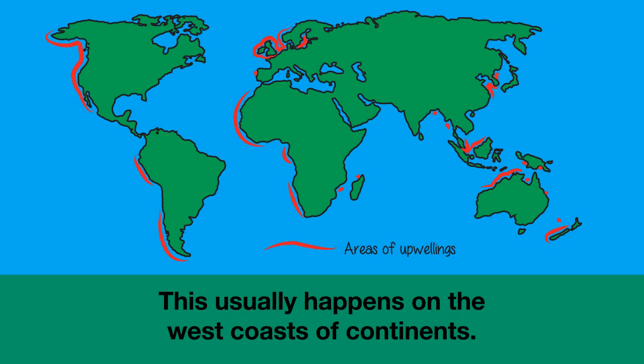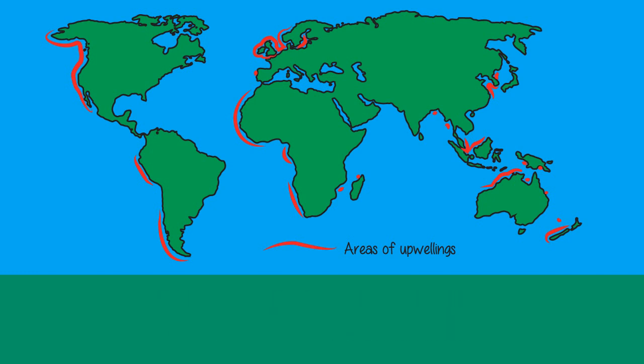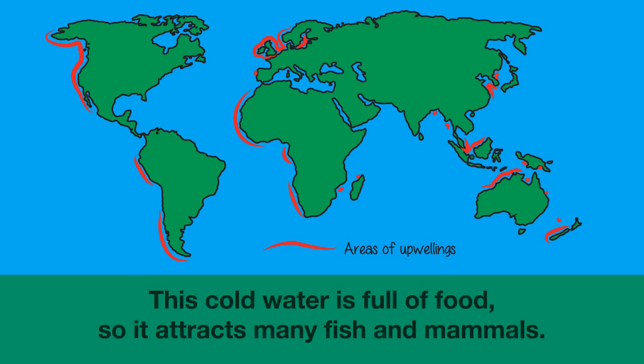This usually happens on the west coast of continents. For example, in California, Peru, the Canary Islands, and Western Australia. Upwellings are great for divers because this cold water is full of food such as phytoplankton, so it attracts many fish and mammals to the coast.